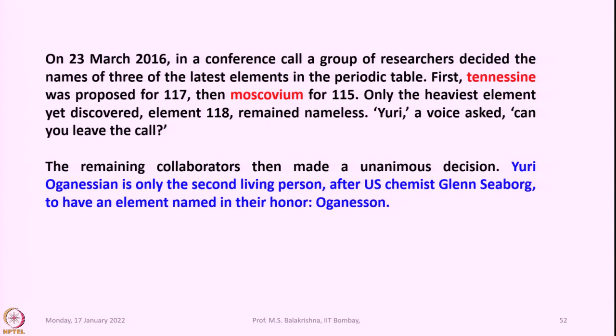On 23rd March 2016, in a conference call, a group of researchers decided the names of three of the latest elements in the periodic table. Tennessine was proposed for atomic number 117 and Moscovium for atomic number 115. The heaviest element yet discovered, element 118, remained nameless. Then in the conference, one scientist Uri Oganessian was asked to leave, and the remaining collaborators made a unanimous decision to name element 118 after Uri Oganessian.